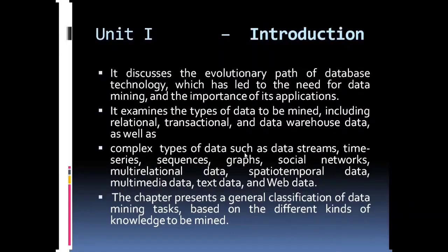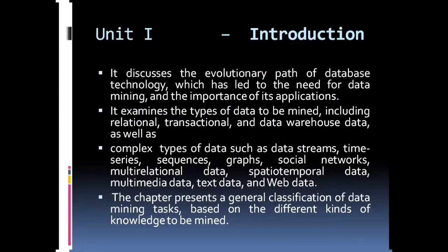Complex types of data include data streams, time series data, sequence data, graphs, and social networks. For relational and transactional data, it will be easy to fetch. But for data streams, graphs, social networks, and multi-dimensional data, extracting data is more complex. Those types of data are called complex types of data.